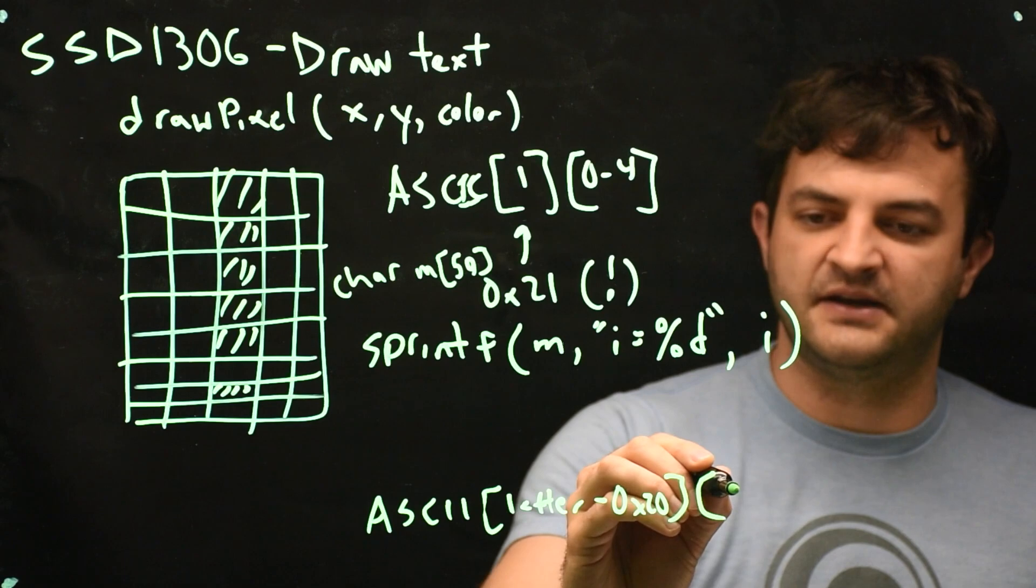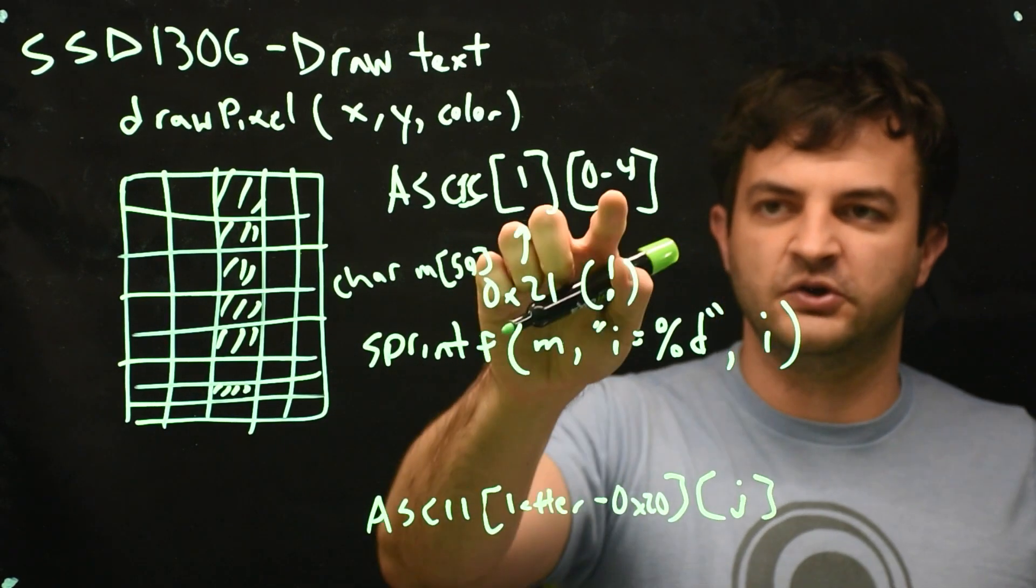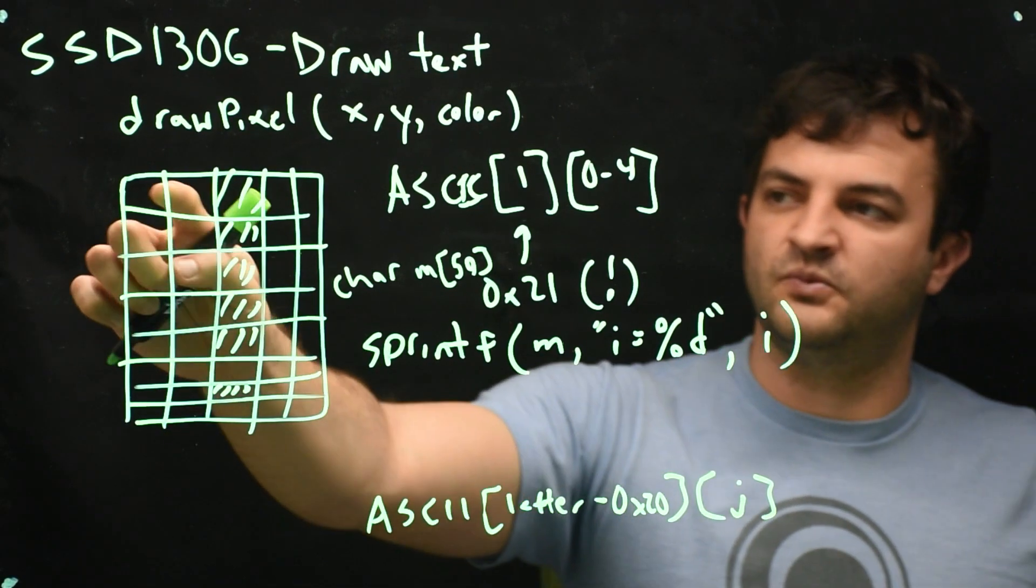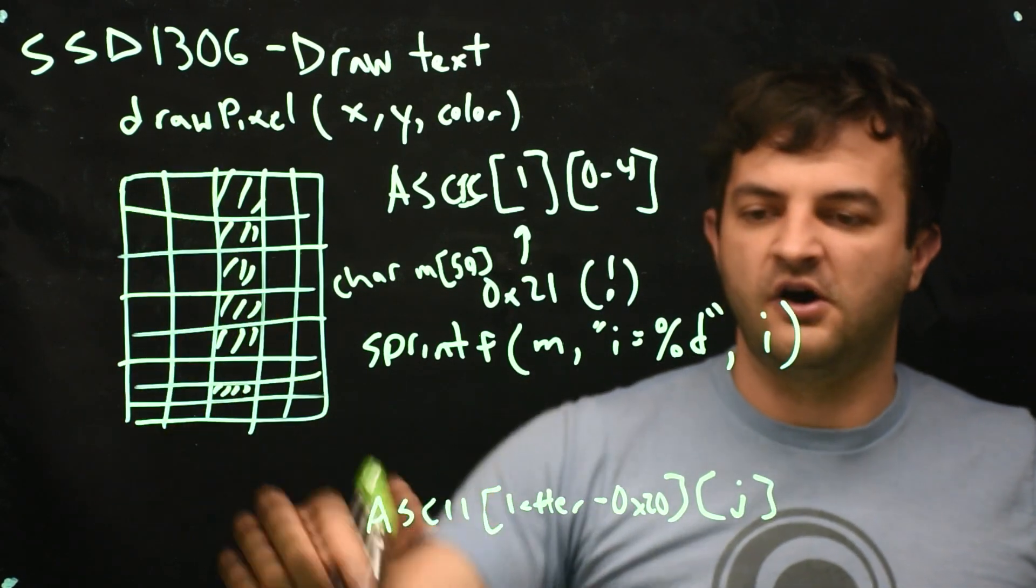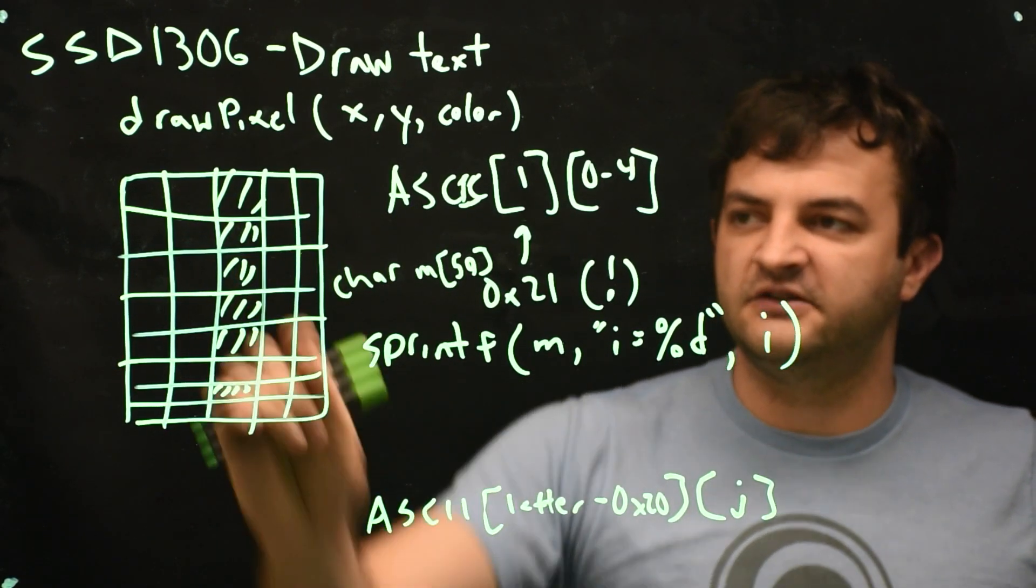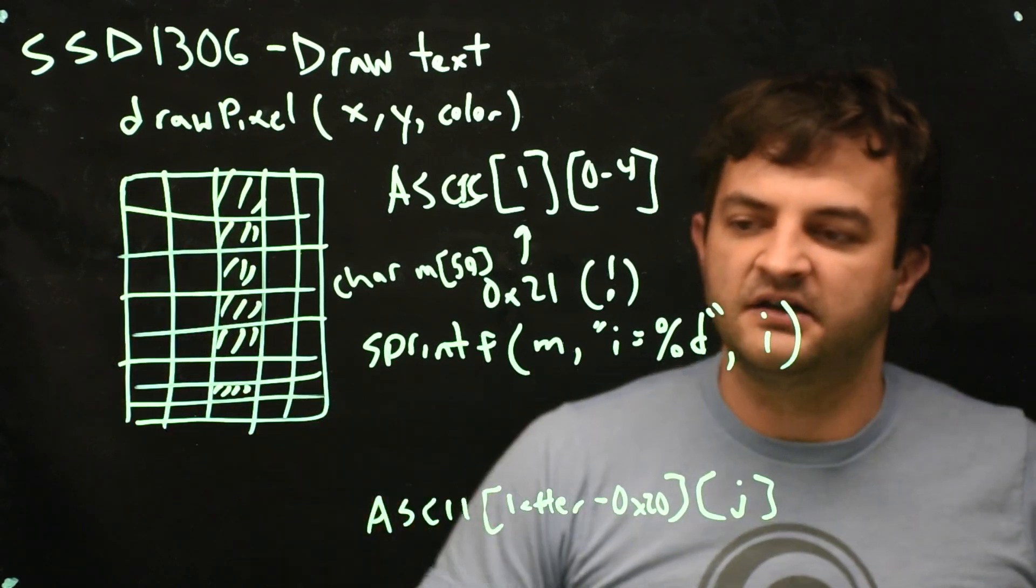And then I need to loop over, let's say I'm looping over a variable called j. j is going to go from 0 to 4. So that's going to tell me what is one of these columns to draw. So I'm going to loop over every column. And then I need to loop through every bit in ASCII to figure out should this be on, should this be on, should this be on.